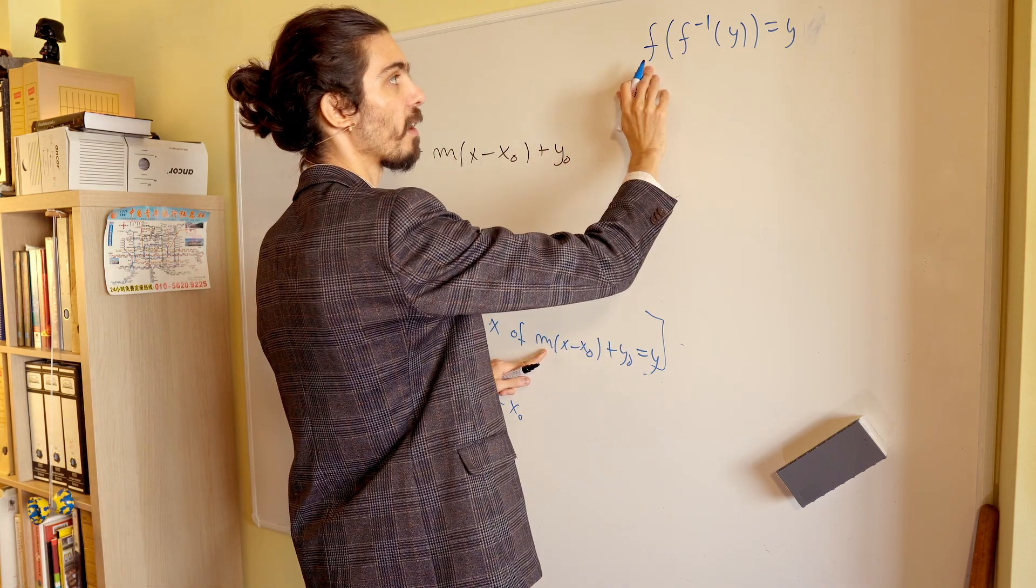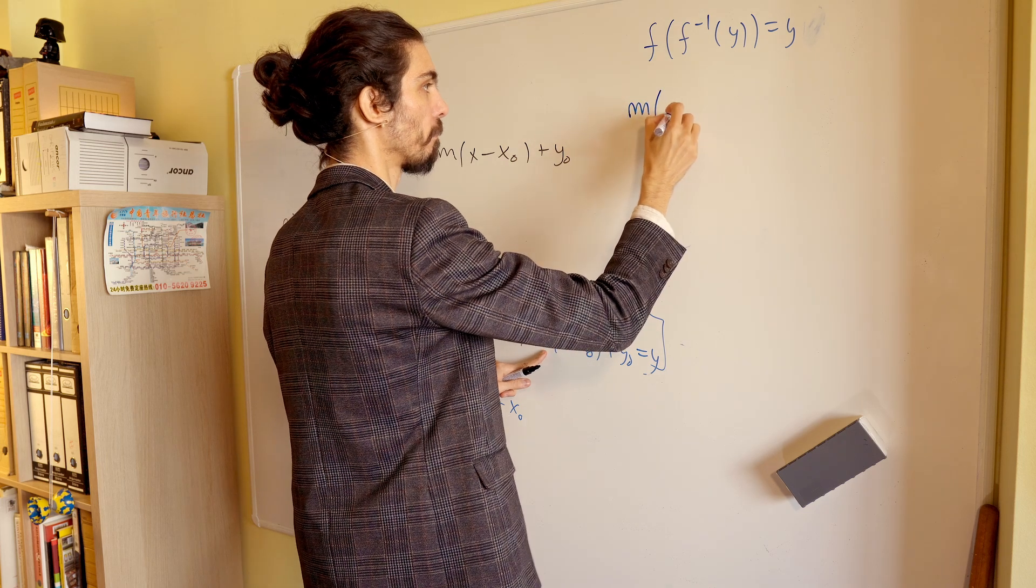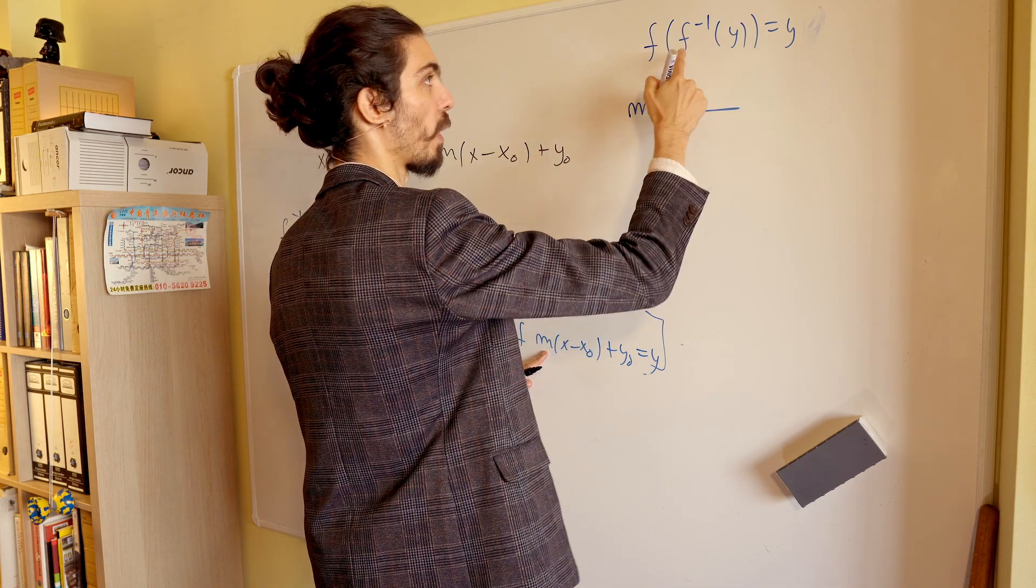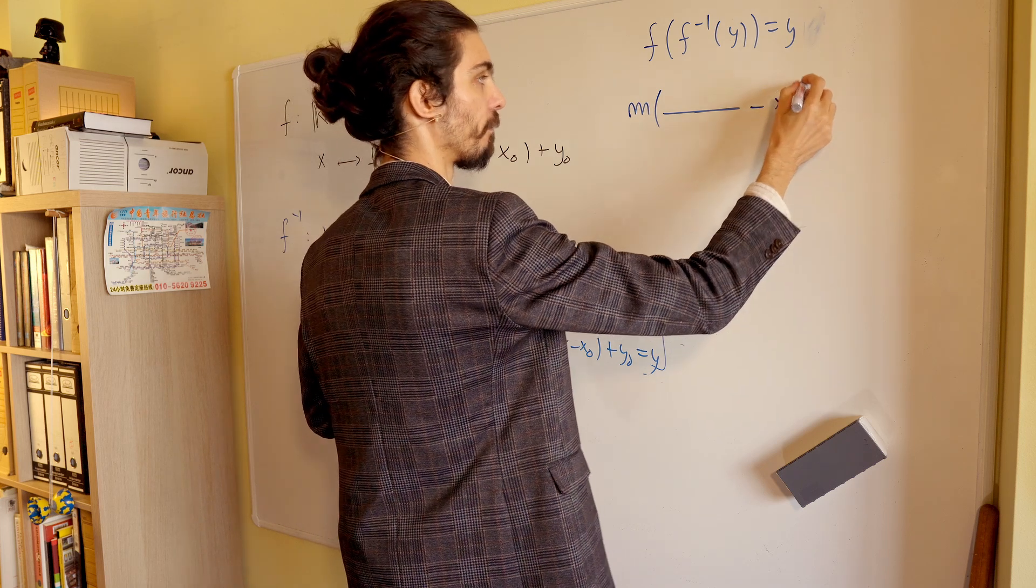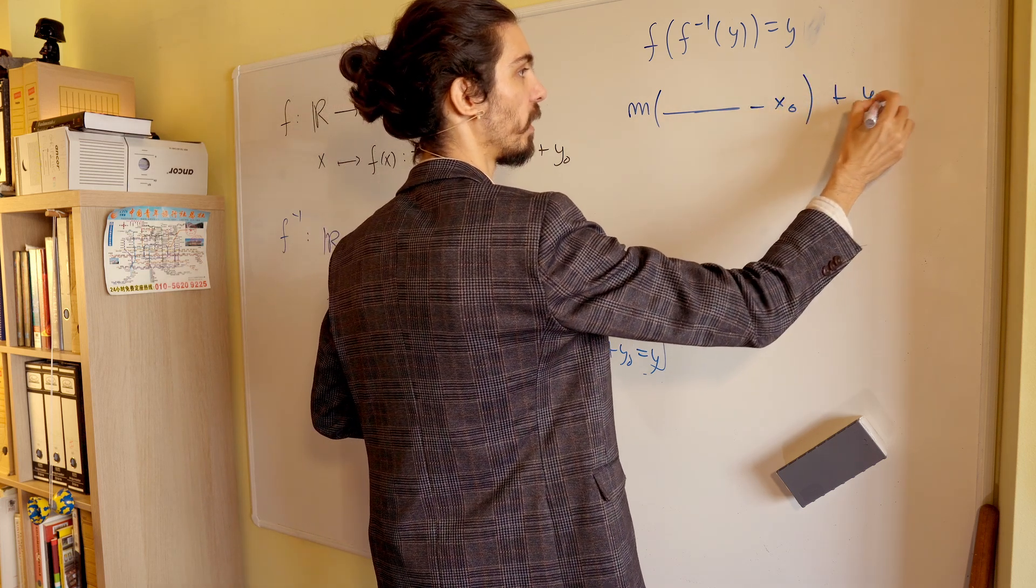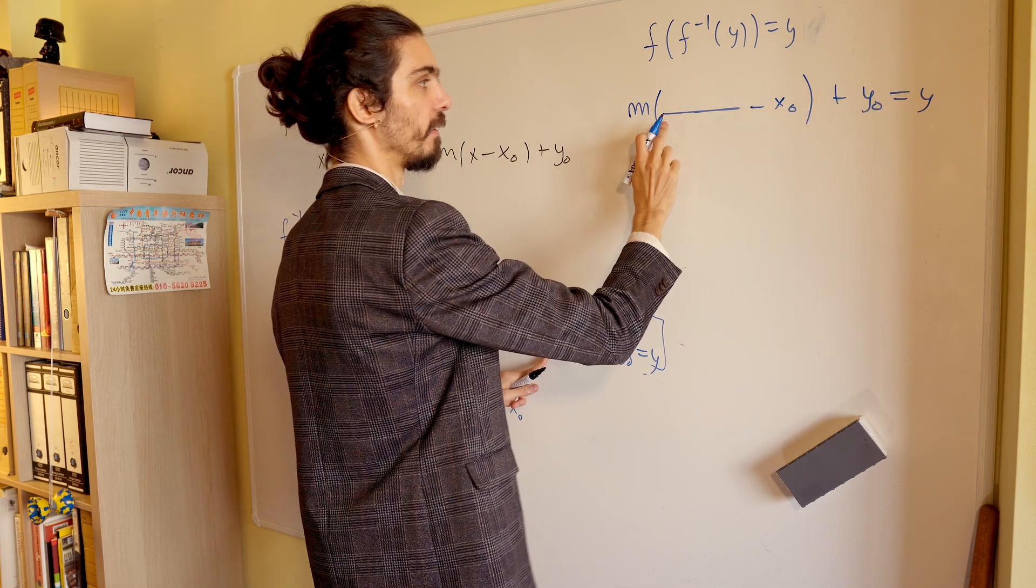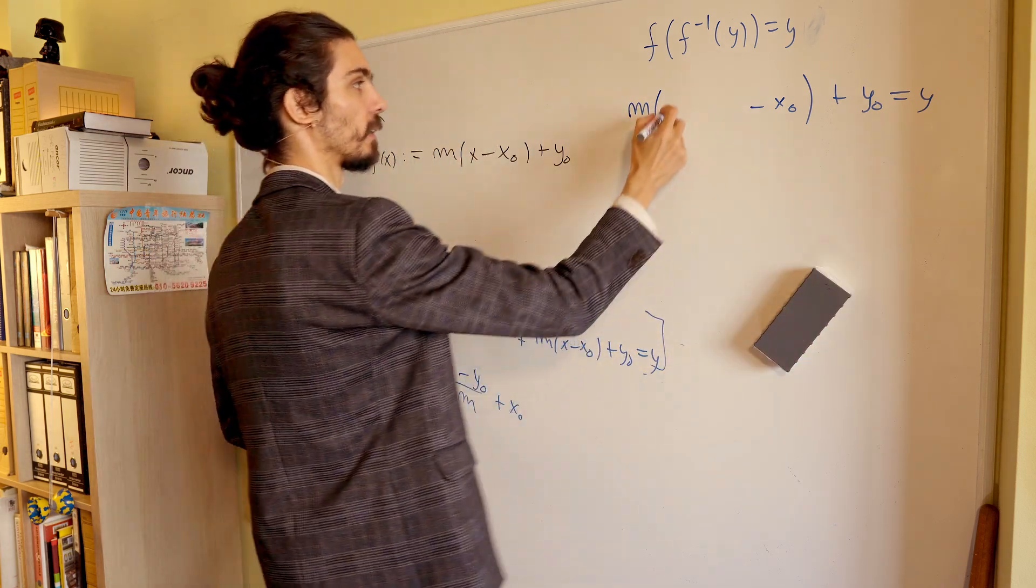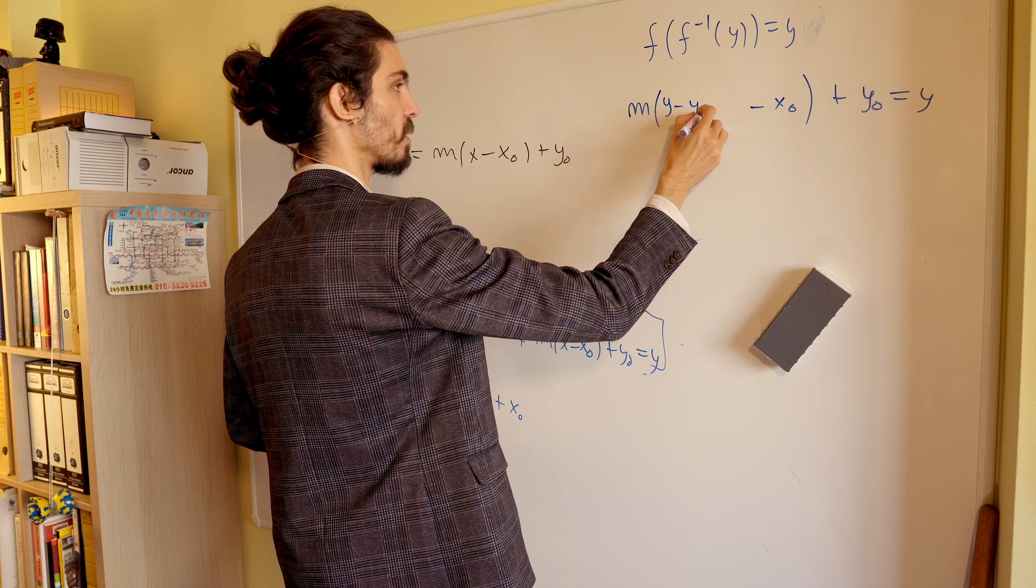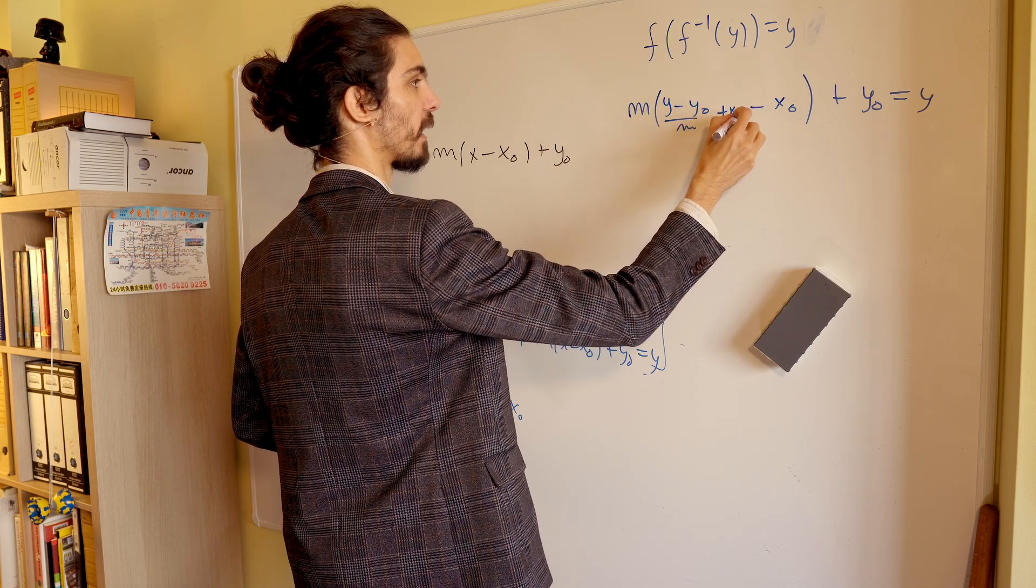Let me write this thing explicitly. So, we have our f function, so f, m, some blank space where f minus 1 of y is going to, minus x0, plus y0, is equal to y. And this blank space now is filled with what? It's filled with this thing: y minus y0 divided by m plus x0.